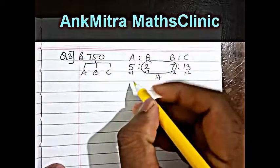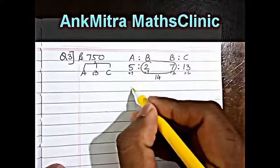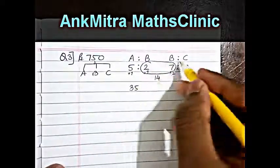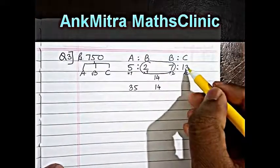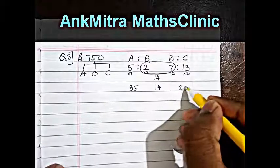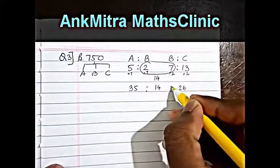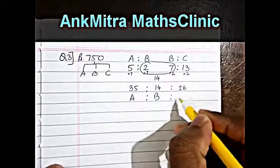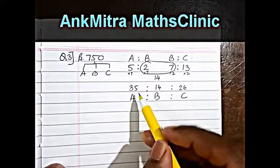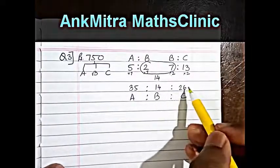So the values for A will become 7 times 5 is 35, the value for B as usual is 14, and the value for C will be 13 times 2 is 26. So A is to B is to C is in the ratio of 35 is to 14 is to 26.